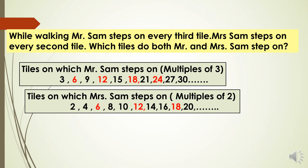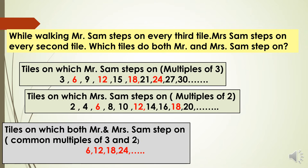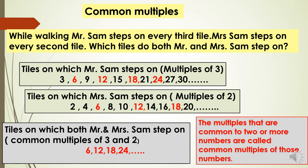The tiles on which both Mr. and Mrs. Sam step are the common multiples. Common multiples of 3 and 2 are 6, 12, 18, 24, etc. The multiples that are common to two or more numbers are called common multiples of those numbers.